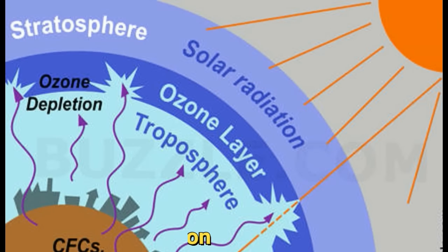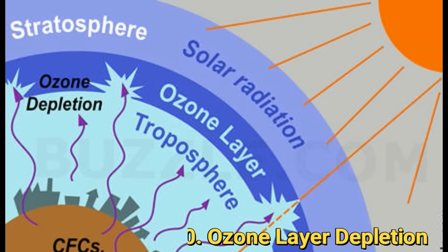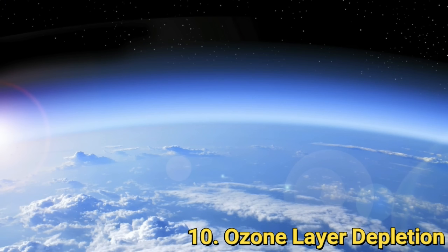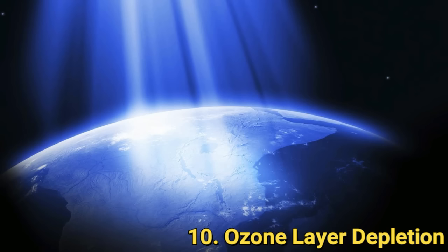Number ten: ozone layer depletion. The ozone layer is an invisible layer of protection around the planet that protects us from the sun's harmful rays. Depletion of the crucial ozone layer is attributed to pollution caused by chlorine and bromine found in chlorofluorocarbons (CFCs). Once these toxic gases reach the upper atmosphere, they cause a hole in the ozone layer, the biggest of which is above the Antarctic. CFCs are banned in many industries and consumer products. The ozone layer is valuable because it prevents harmful UV radiation from reaching the earth. This is one of the most important current environmental problems.